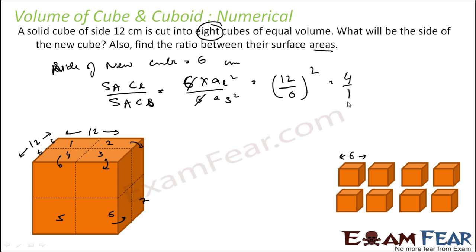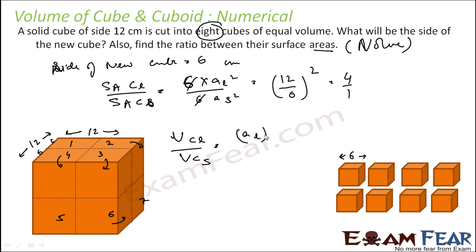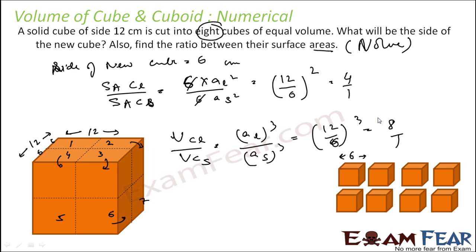If you also want to find the ratio of their volumes, volume of the large cube to the small cube is a-large cubed by a-small cubed — that is 12 by 6 cubed — which is 8 by 1. So the ratio of volumes is 8:1, the ratio of surface areas is 4:1, and the ratio of sides is 2:1.